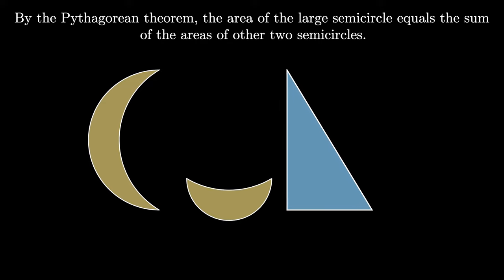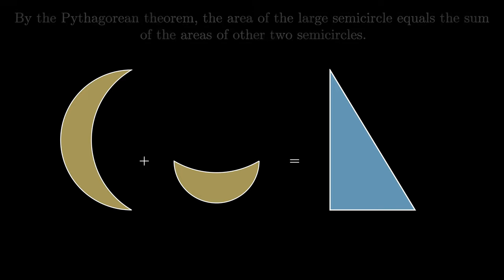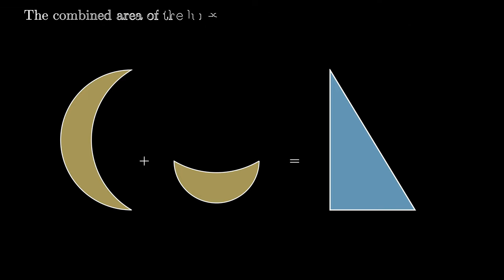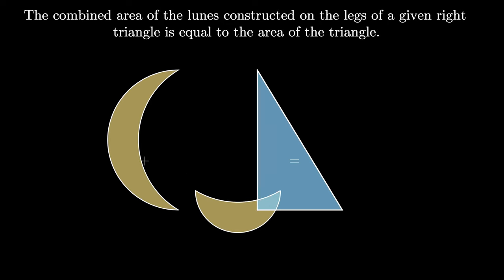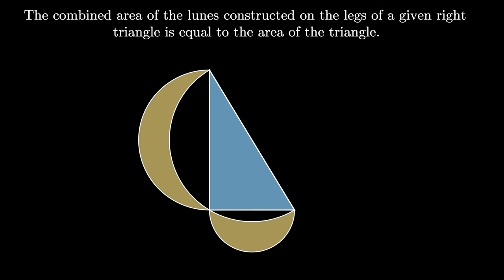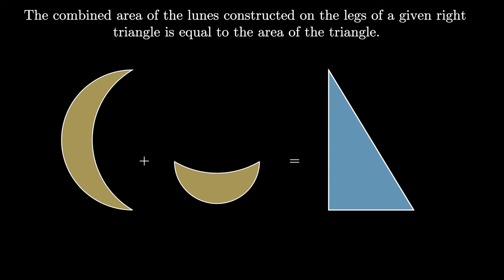But from the Pythagorean Theorem, we know that the blue shaded area and the yellow shaded area are still equal. This means that the combined area of the two lunes constructed on the legs of a given right triangle must be equal to the area of that right triangle. This is a theorem due to Hippocrates of Chios.